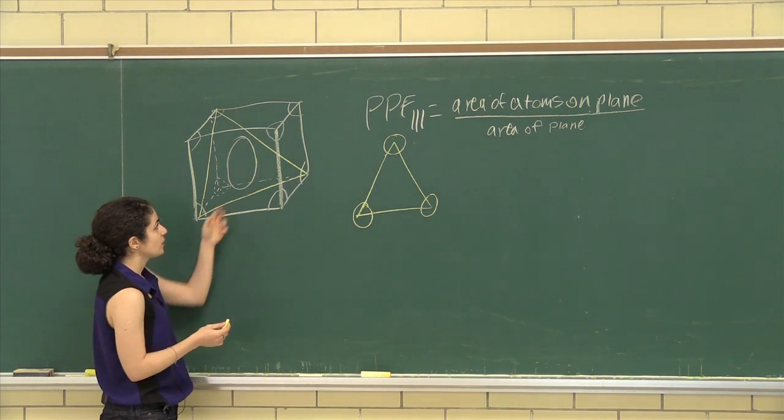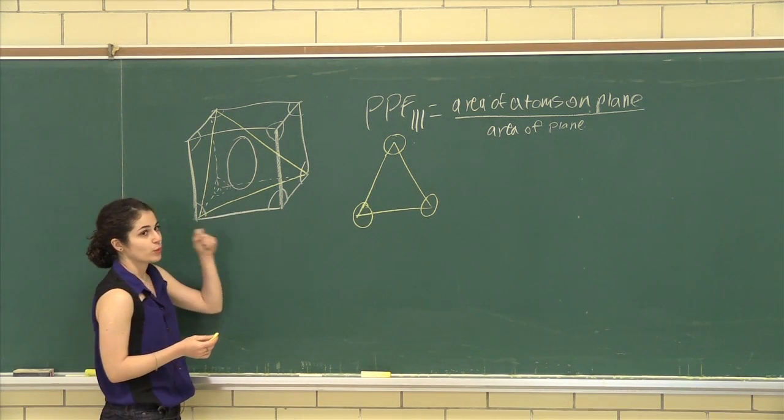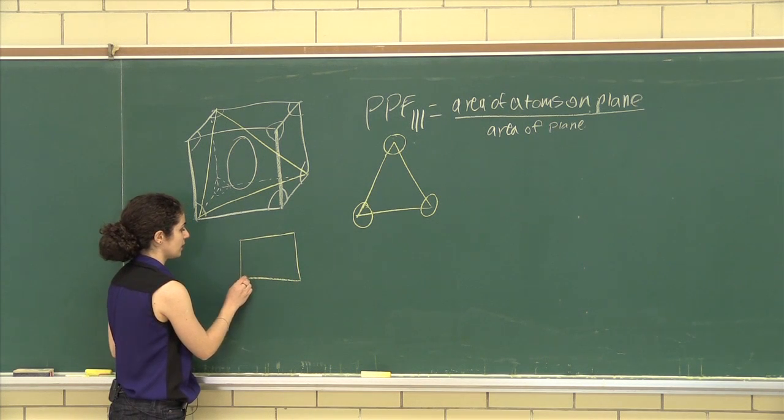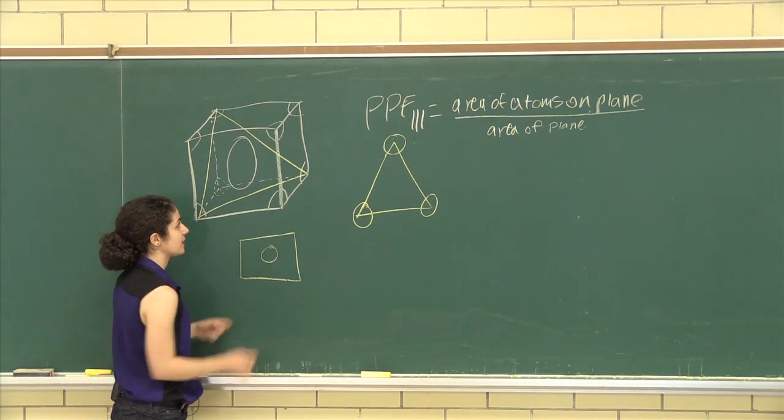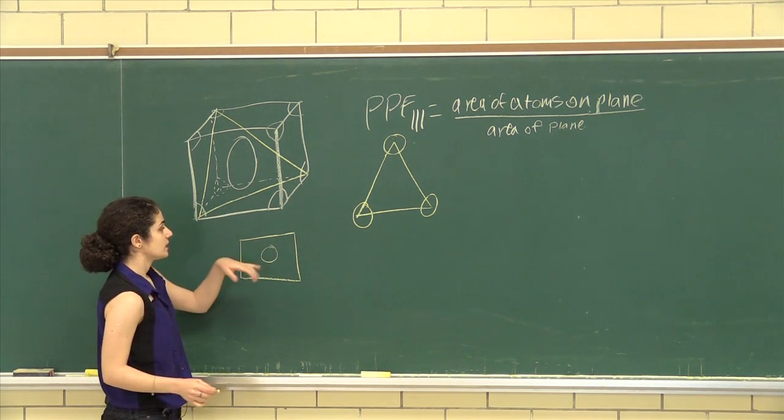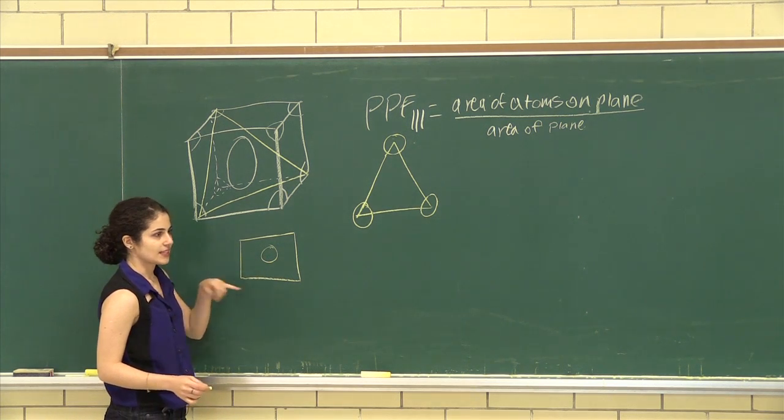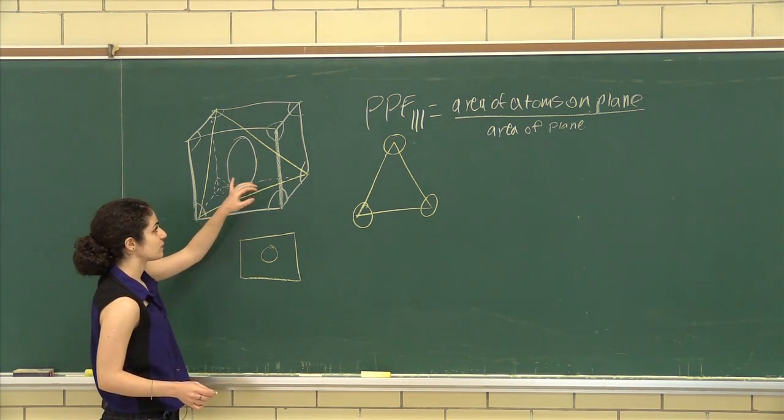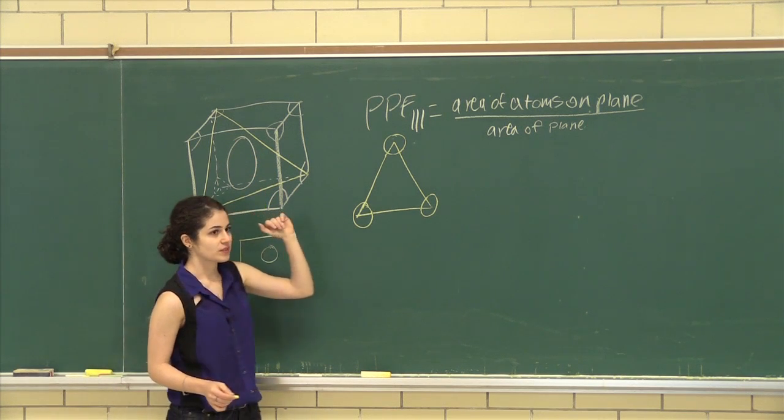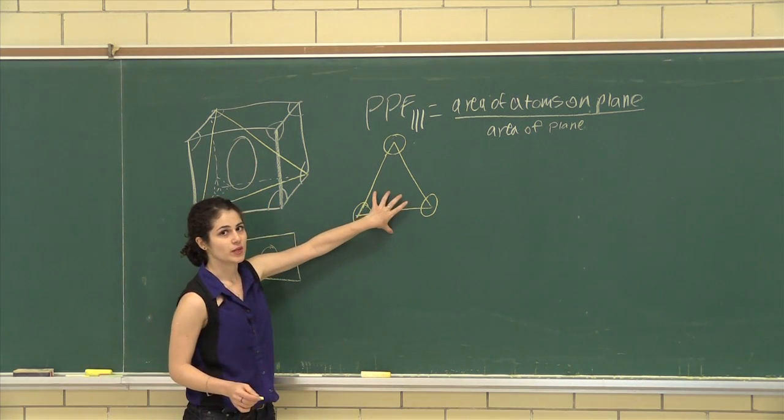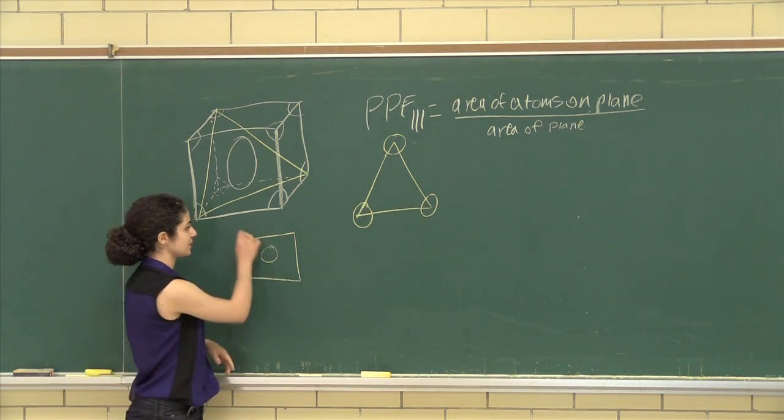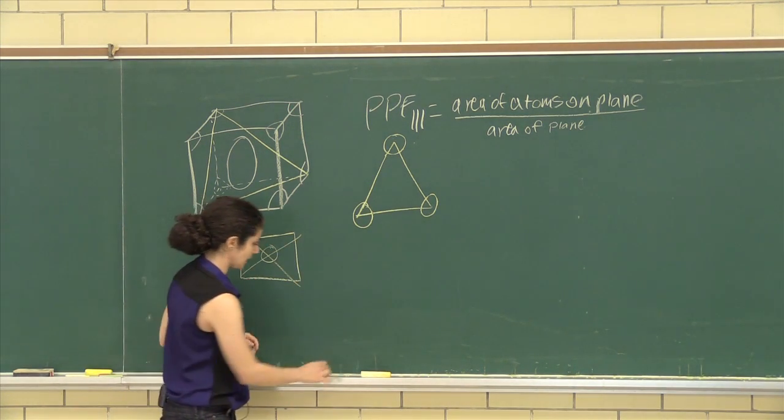So if I were to look at the 110 plane, which looks like this, this is where you'd find the center of the middle one lies on the 110 plane. But if you look at it more closely, the center of the plane does not lie on the 111 plane. And so it does not count as the planar density. So that's gone.